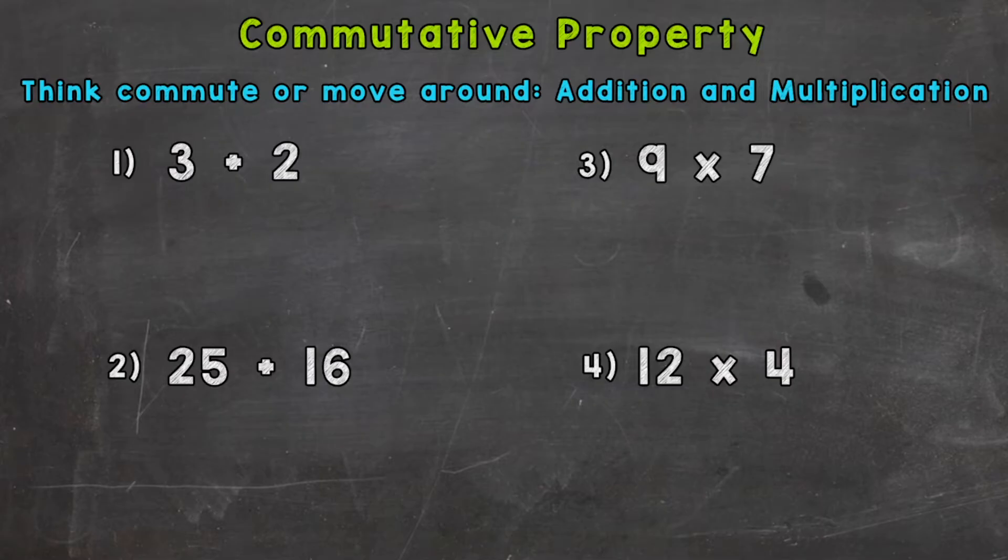When we think commutative property, we need to think commute or move around. This property only applies to addition and multiplication. We're going to do a couple of addition examples and a couple of multiplication examples.